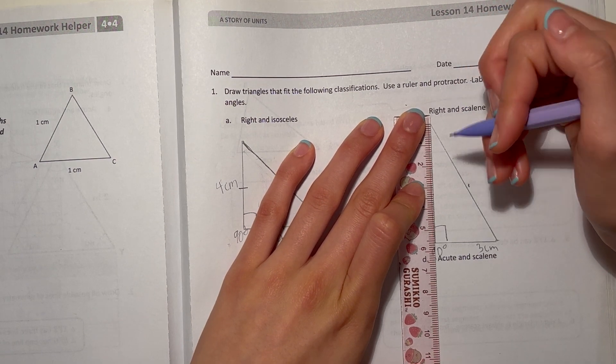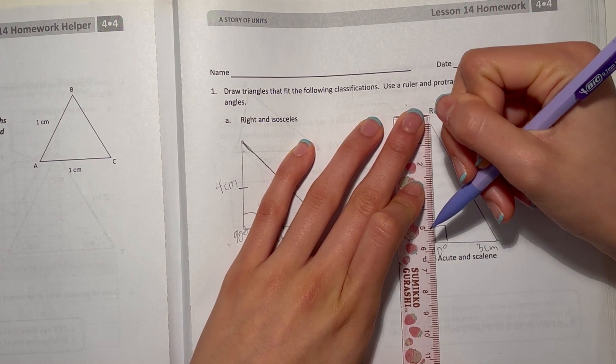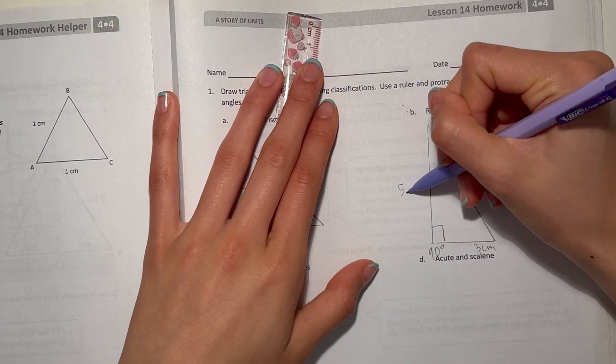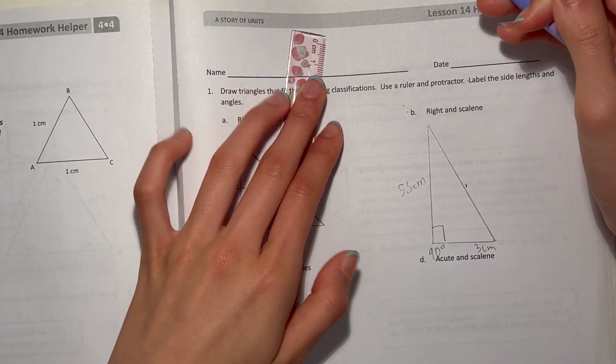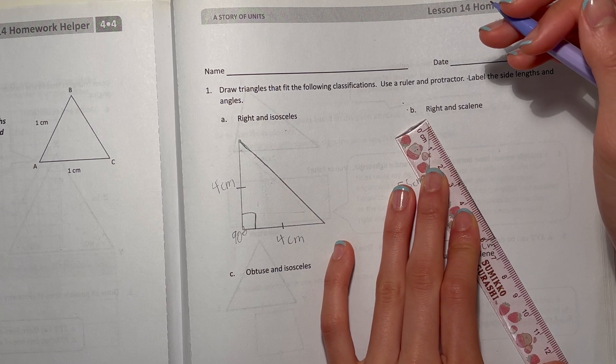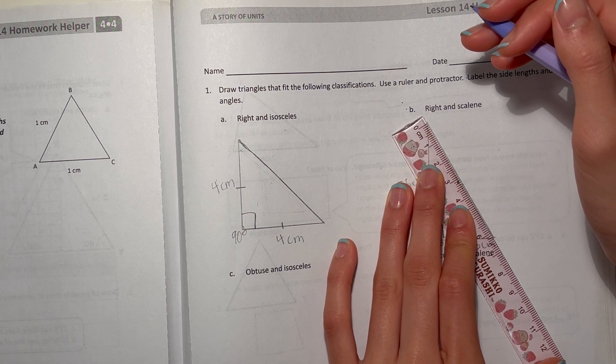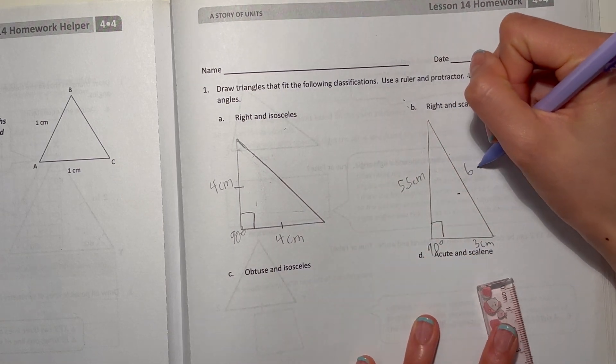And here would be... what does that say? Around six, or we can put 5.5 centimeters. We'll just say around six centimeters.